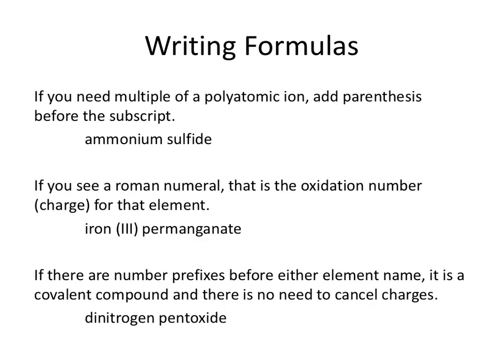If you need to have multiple of a polyatomic ion, add parentheses before the subscript. So NH₄ is plus 1, and sulfide is sulfur at minus 2. Obviously I'm going to need two of these ammoniums. When I have ammonium and I need two of them, instead of just putting a 2 at the end — because that looks like 42 hydrogens and only 1 nitrogen — I want parentheses, so that I have two groups of NH₄. Then sulfide is the single element S.